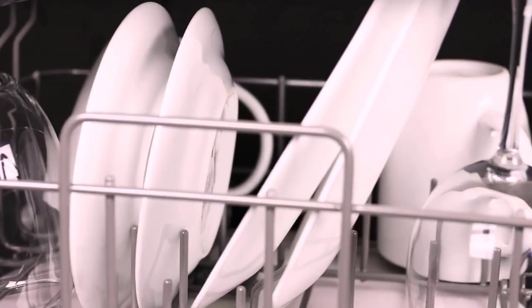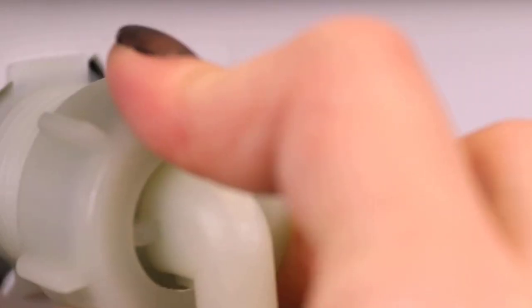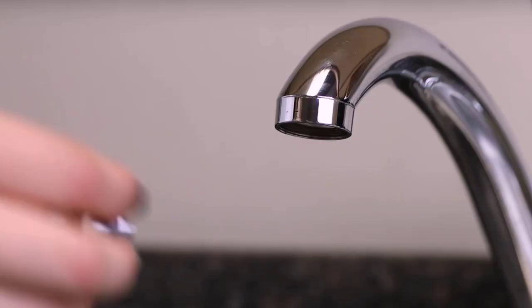However, if you prefer a direct water hookup, a water hose is included in the package, but you'll need to purchase an adapter separately. The lower and upper spray arms give dishes a deep cleaning, leaving them streak-free and sparkling clean.